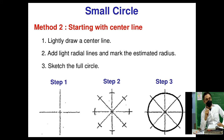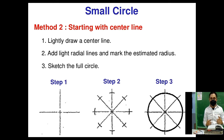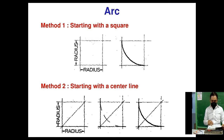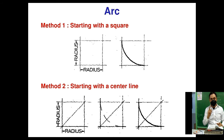For a small circle: step one, lightly draw a center line; step two, add light radial lines and mark the estimated radius; step three, sketch the full circle arc. There are two methods for drawing an arc — method one starting with a square, and method two starting with a center line. That is the technique for drawing a perfect arc.